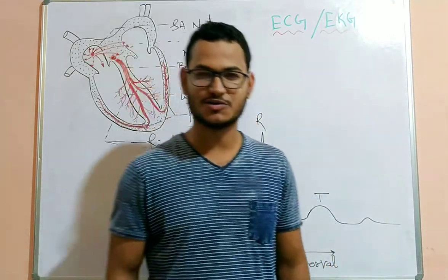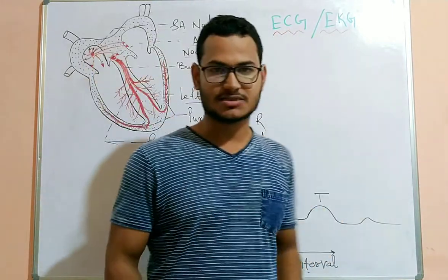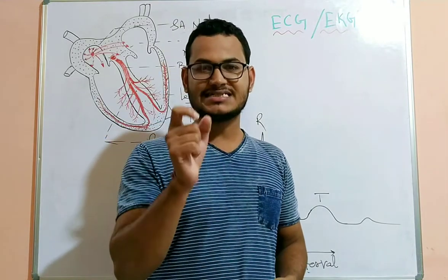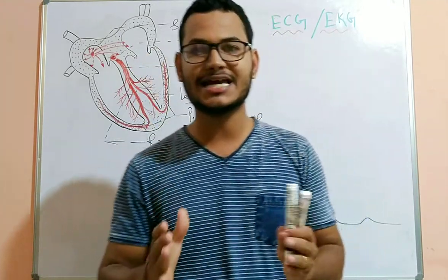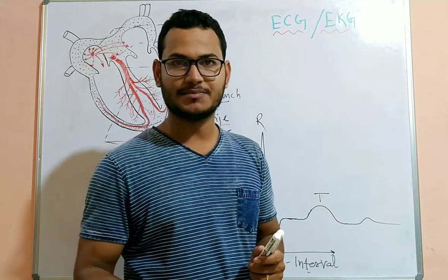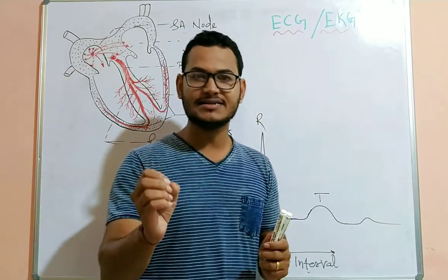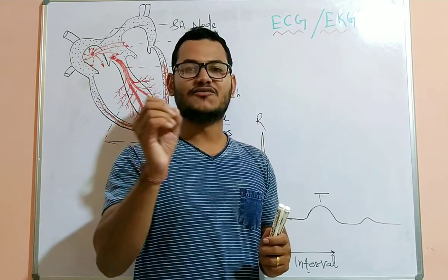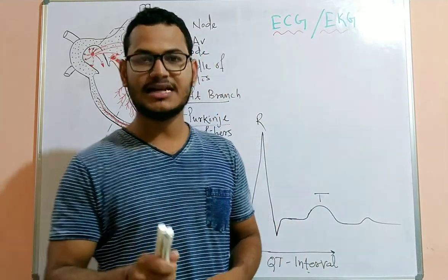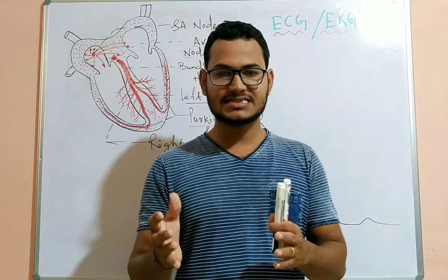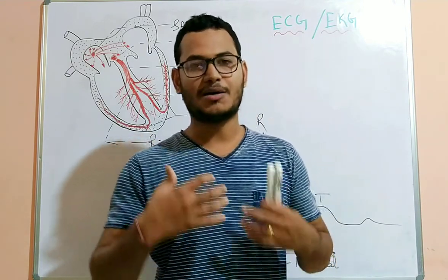Welcome to this lecture on ECG or EKG, the electrocardiogram. The ECG recording is the recording of electrical changes that occur in the myocardium — the special type of muscle of the heart — during a cardiac cycle. All electrical changes that occur during a single cardiac cycle are recorded in the form of a graph known as the electrocardiograph, and the instrument used is called the electrocardiogram.